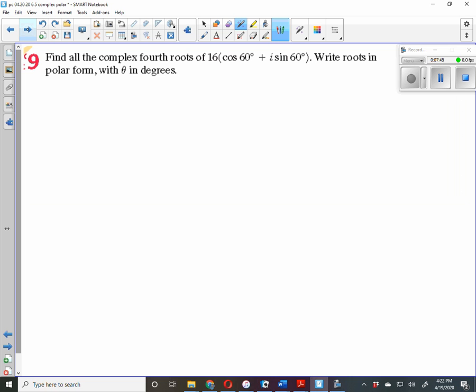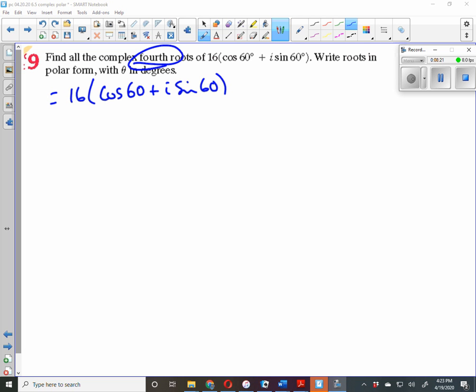Find all complex fourth roots of 16(cos 60° + i sin 60°). Write roots in polar form. So let's go ahead and figure out how to write this down. We want to find the fourth root of 16(cos 60° + i sin 60°). The fourth root.